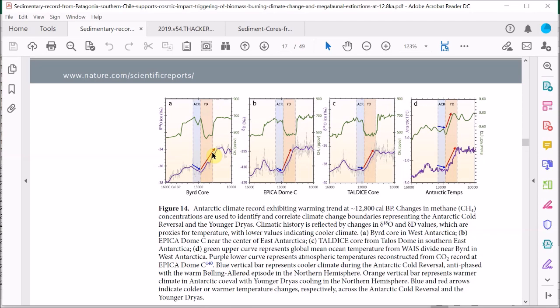So these are temperature reconstructions from Antarctic ice cores, and these green upper lines here are atmospheric methane concentrations, which clearly show the relative location of the Younger Dryas period.